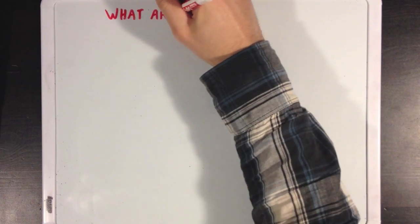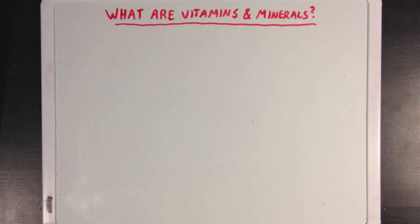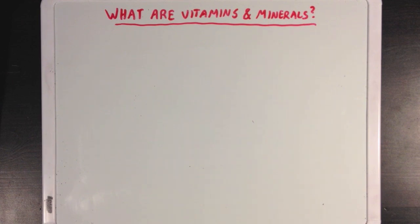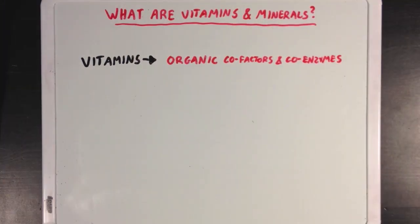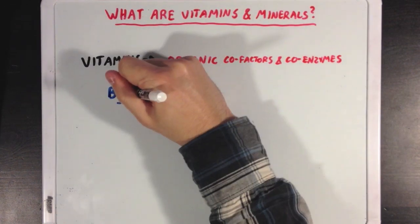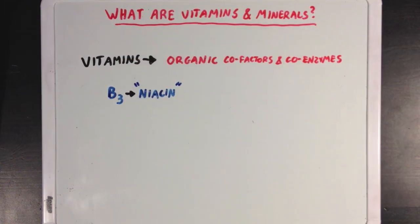Now interestingly, what people normally call vitamins and minerals — like the kinds that a doctor would tell you to make sure you get enough of in your diet — are often different cofactors and coenzymes. What's special about vitamins and minerals is that your body can't build them from scratch, and you need to get them from your diet to stay healthy. When we say vitamins, we typically refer to organic cofactors and coenzymes. For example, vitamin B3, which you may see called niacin on a food label, is actually just a precursor for NAD, and vitamin B5 is just a precursor for coenzyme A.